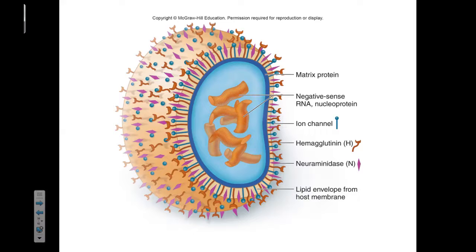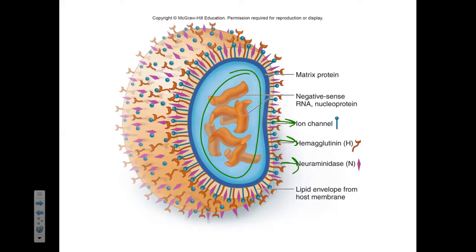Here we can see the virion. It has its RNA inside of its capsid. This RNA is stored as negative-sense RNA. And on the surface of the virion, we'll have that ion channel, the hemagglutinin, and the neuraminidase, in addition to all that being embedded in the lipid envelope, which is superficial to the matrix proteins that make up the capsid of our virus.